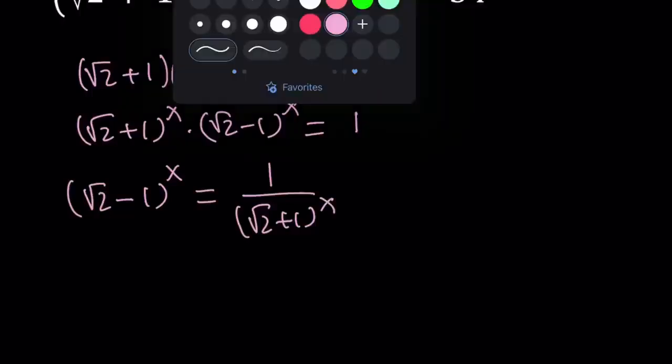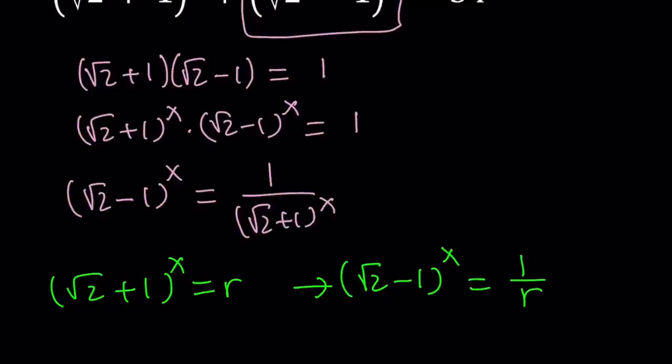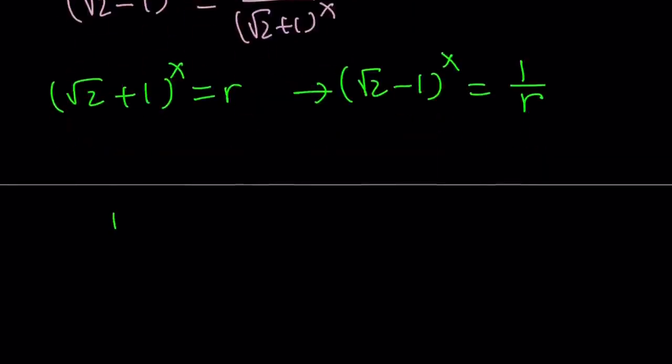So, we'll do some naming here. Let's go ahead and name this square root of 2 plus 1 to the power x something. How about r? This implies r for radical. Square root of 2 minus 1 to the power x equals 1 over r. And now our equation becomes r plus 1 over r equals 34.